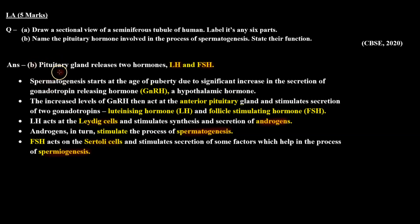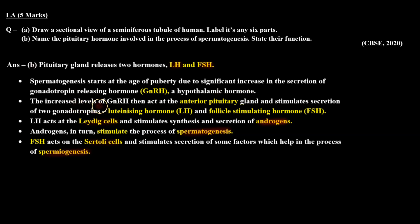For the detailed answer of Part B: the pituitary gland releases two hormones, LH and FSH. Spermatogenesis starts at the age of puberty due to a significant increase in the secretion of gonadotropin-releasing hormone, GnRH, a hypothalamic hormone. The increased levels of GnRH act at the anterior pituitary gland and stimulate secretion of two gonadotropins — luteinizing hormone, LH, and follicle stimulating hormone, FSH.